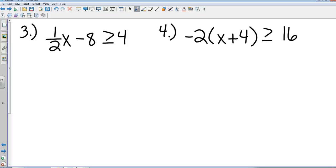And then number 4, negative 2, parenthesis, x plus 4, greater than or equal to 16. Again, just solve only. No number lines on these. Okay, number 3. Hayden Spillers, first step. Add 8 to both sides. So that gives us 1 half x greater than or equal to 12.